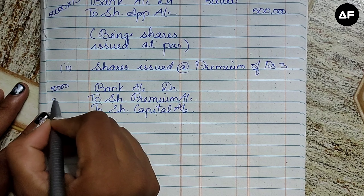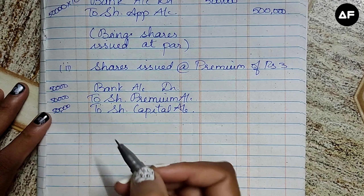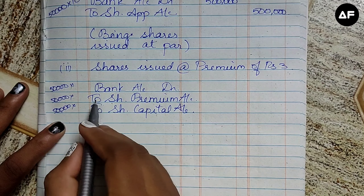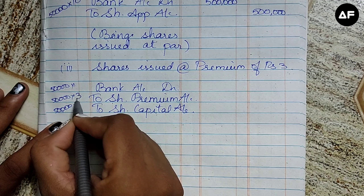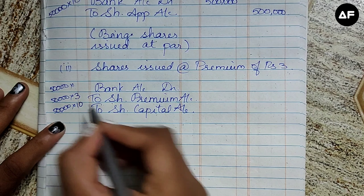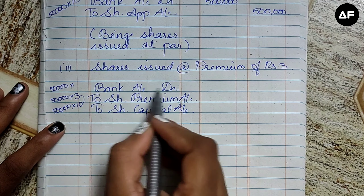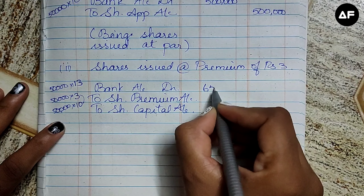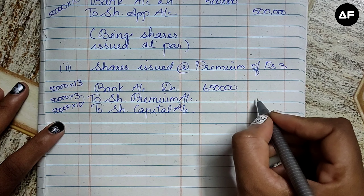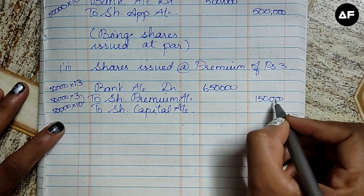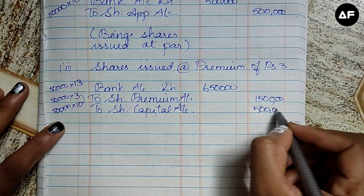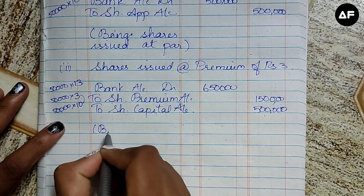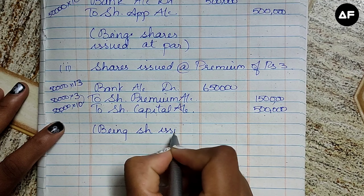The number of shares is the same — 50,000 shares for all three line items in the journal entry. The premium is three rupees and the share capital face value is ten rupees, so the bank debit is 13 rupees per share. Therefore, 50,000 into 13 equals six lakh fifty thousand. Alternatively: 50,000 into 3 is one lakh fifty thousand, and 50,000 into 10 is five lakhs; adding these gives six lakh fifty thousand — this is shares issued at premium.